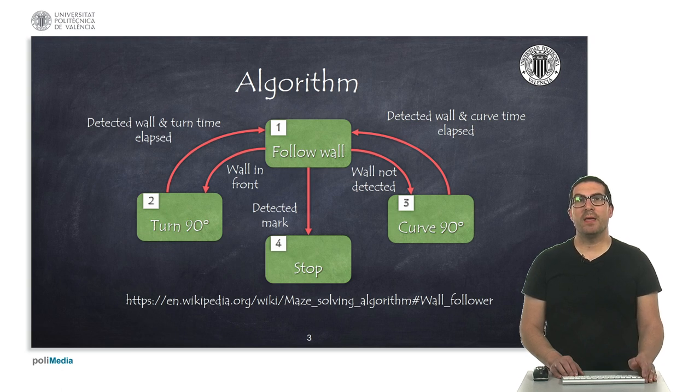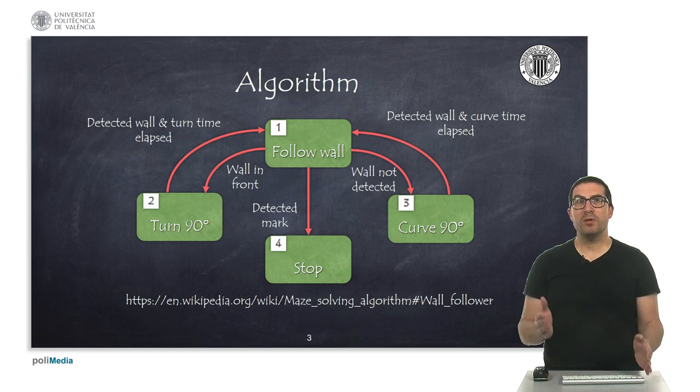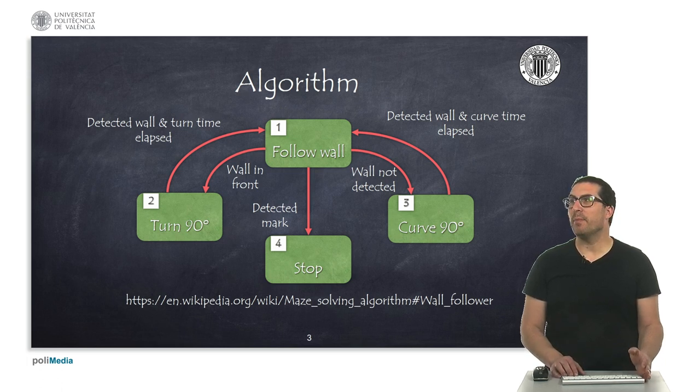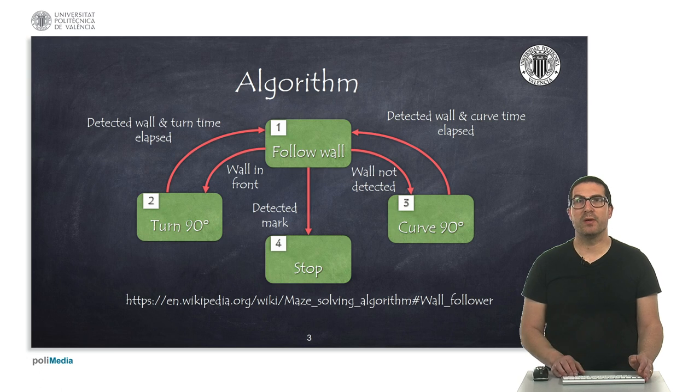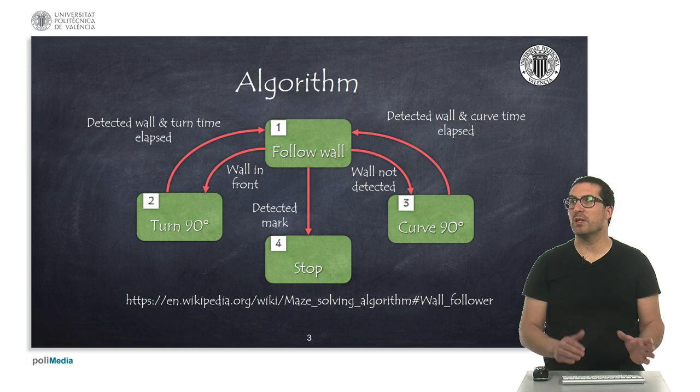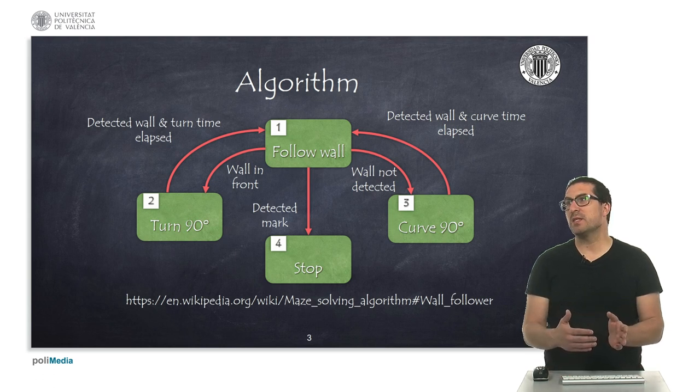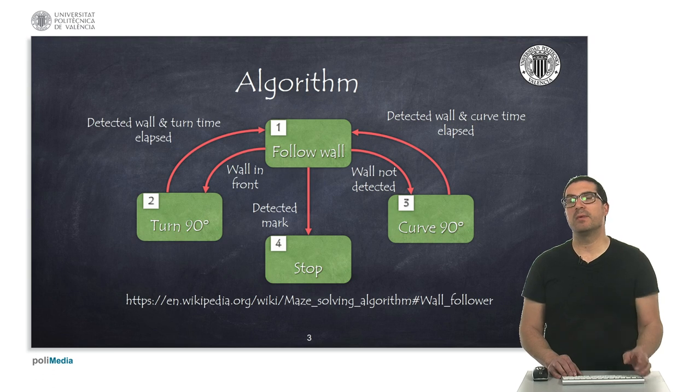In this situation, what can happen is that you can follow the wall on the left or the right. What can happen is that you detect a wall in front or you stop detecting the wall you were following. In case of detecting a wall in the front, what you have to do is make a turn 90 degrees, that's a pure rotation. Once this is done, then you can go back to state one to follow the same wall.